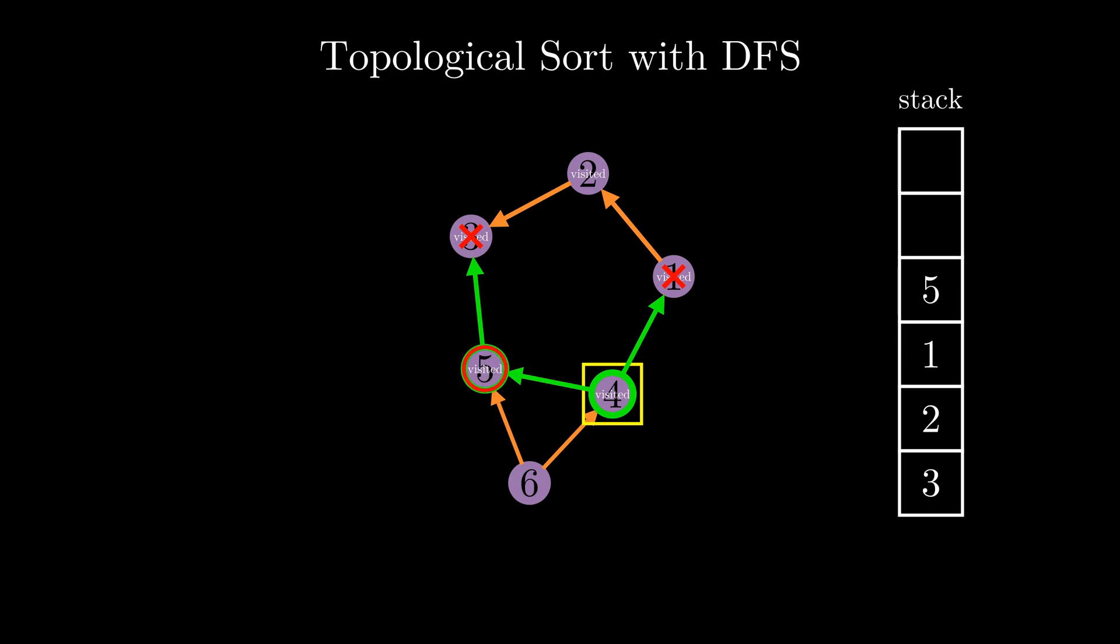Then we backtrack to node 4, add its value to the stack, and then backtrack again, which brings us back to the iterator or the loop. So we'll iterate up to 5, and see that it's visited, so then we iterate up to 6. Now 6 has two out degrees, but both of them lead to visited nodes. So actually, all we can do at node 6 is backtrack. But before that, we can't forget to add the value to the stack. Then we backtrack, and at this point, we've iterated through all of the nodes so our loop will terminate.